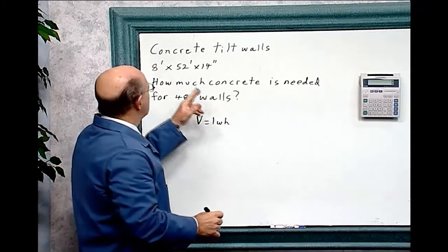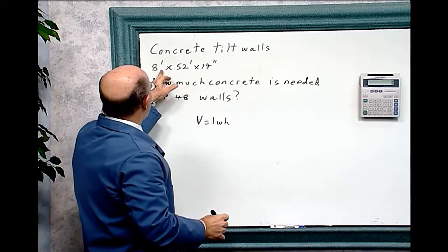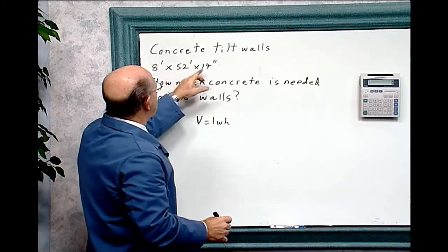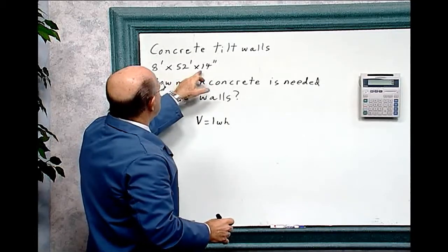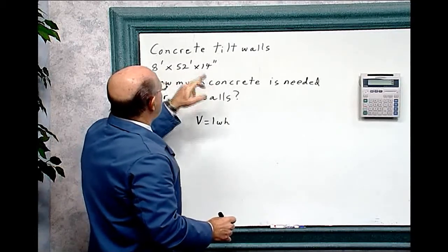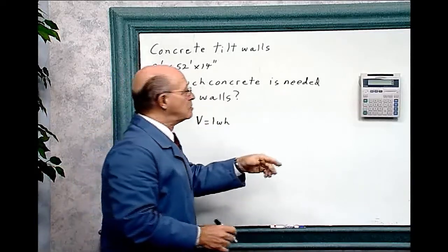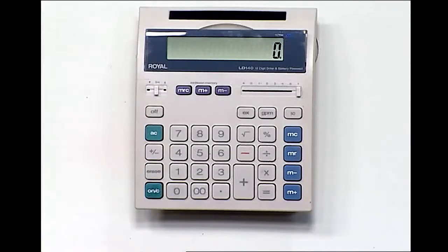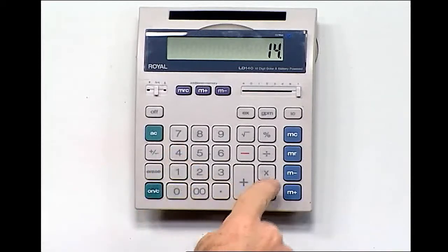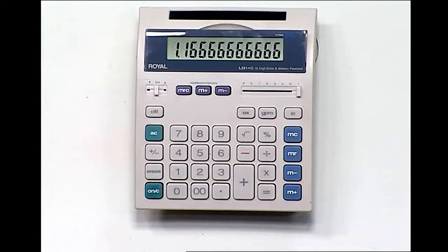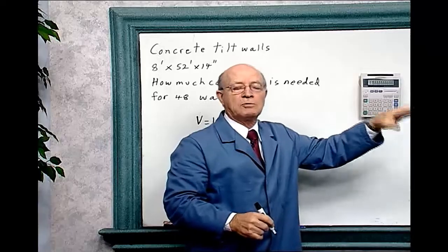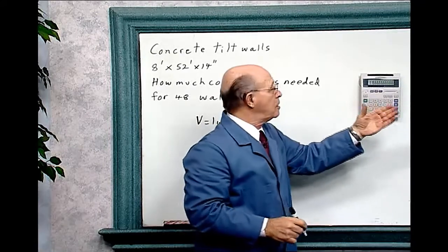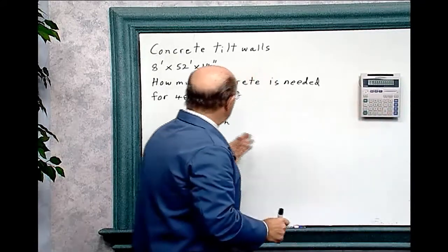Now, we have a problem here. This is 8 feet, this is 52 feet, and this is 14 inches. We can make them all inches or all feet. Since we have 2 feet, we'll make 14 inches into feet. So 14 divided by 12 equals—so 14 inches equals 1.166666. We'll just leave that in. Now we can use that formula.